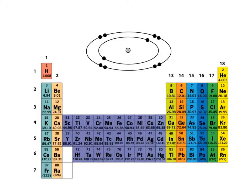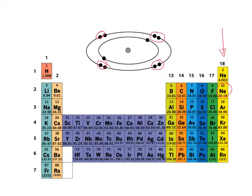One last one — see if you can pause the video and tell me what element this is. It has eight valence electrons, so it's in group 18, and they're in the second period — so this is neon. It's got a full valence shell. Hopefully you now know the difference between core and valence electrons and can see how the periodic table is organized to reflect the number of valence electrons and where they're located.